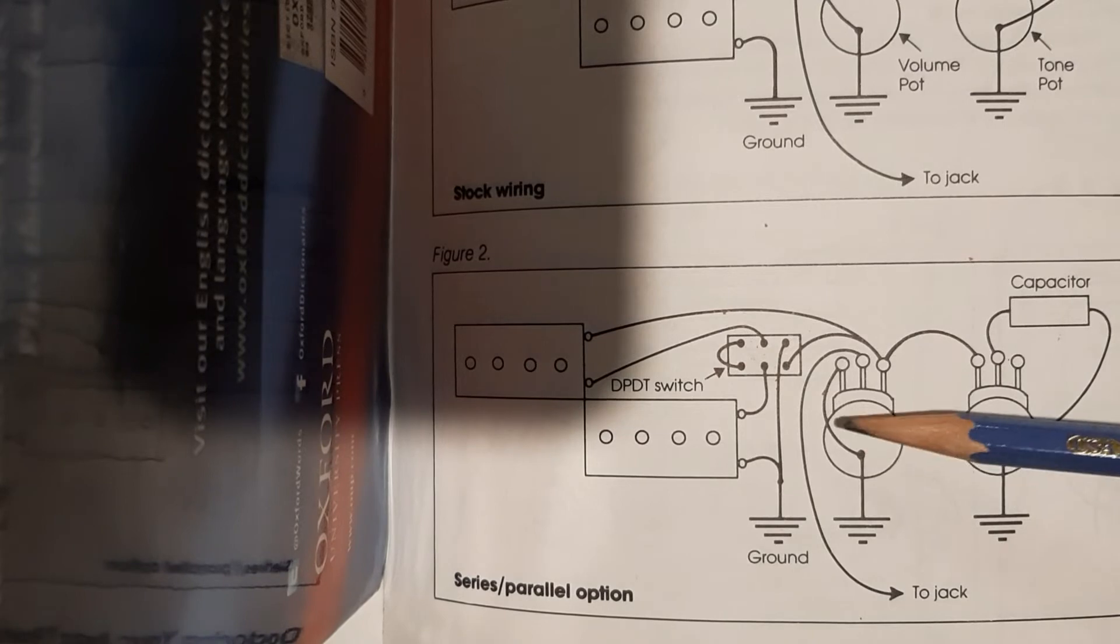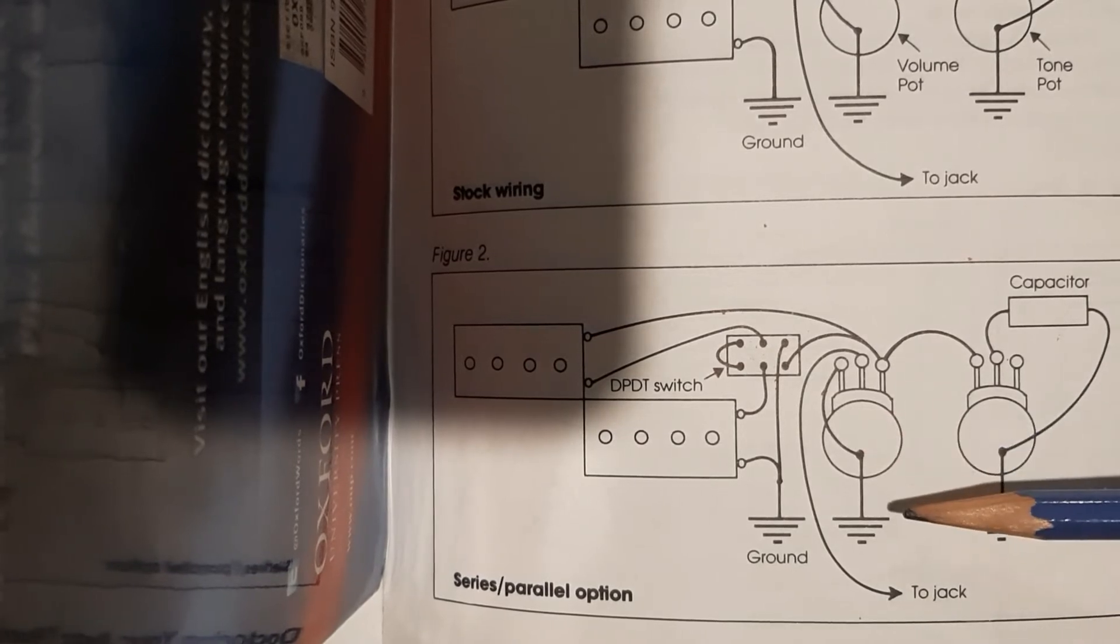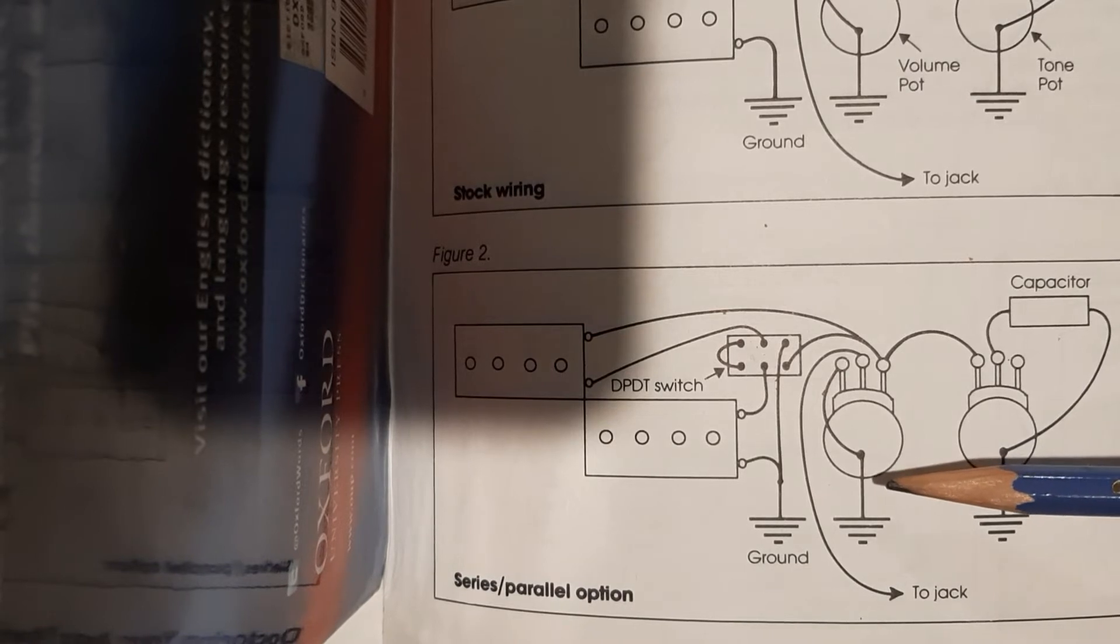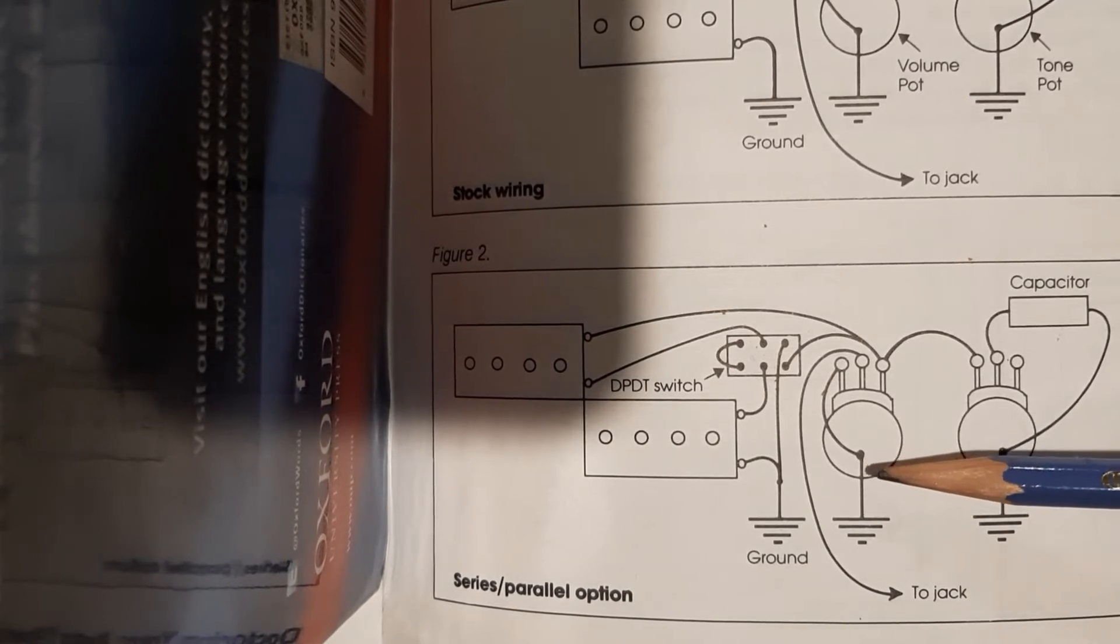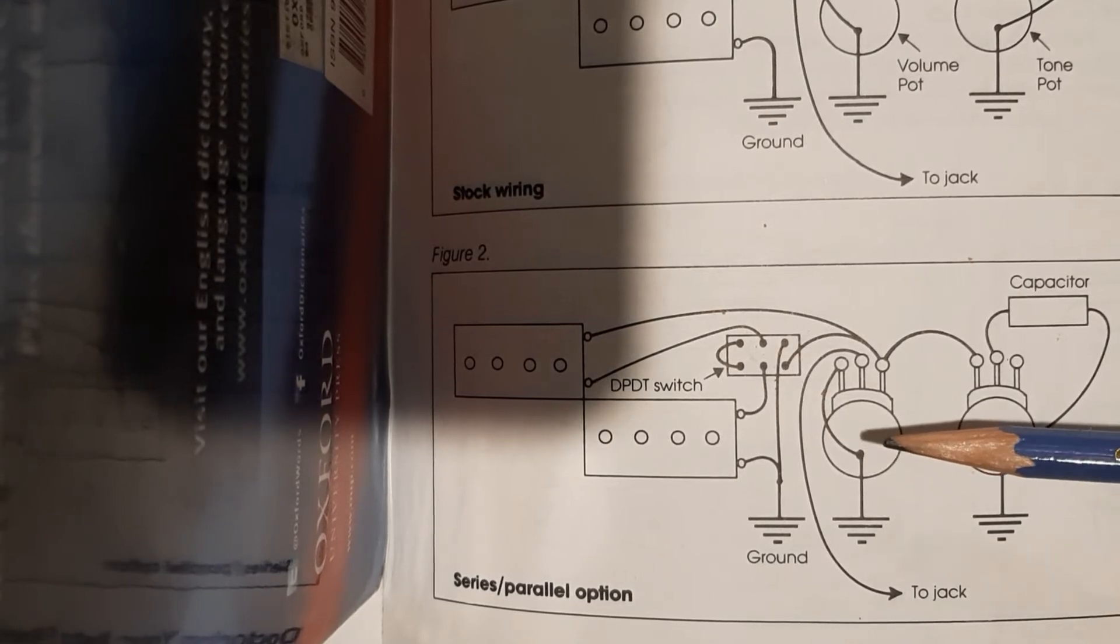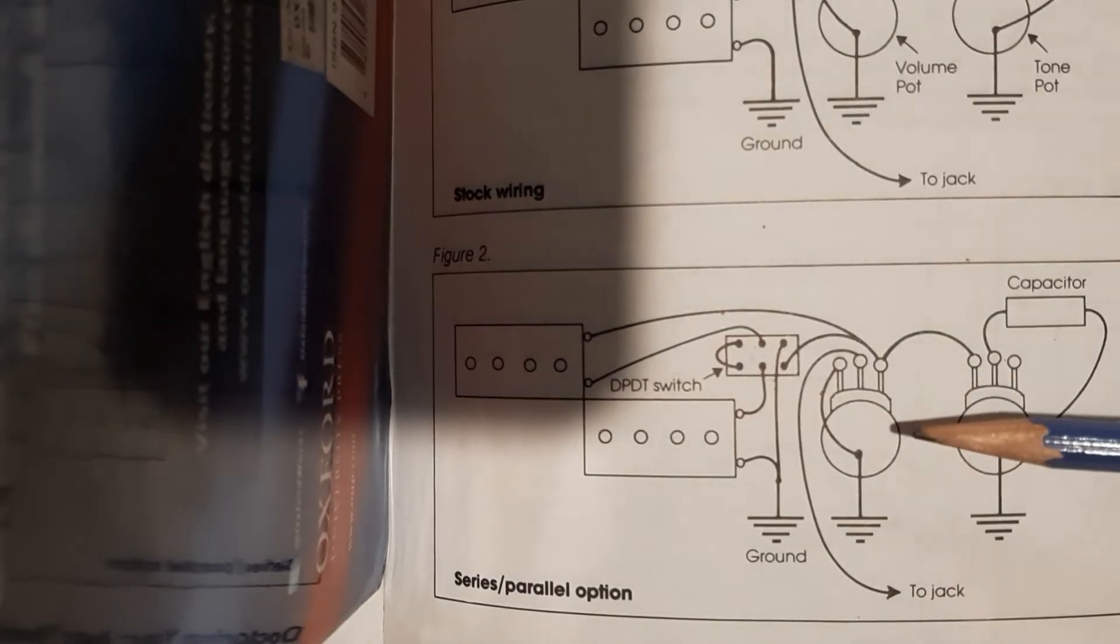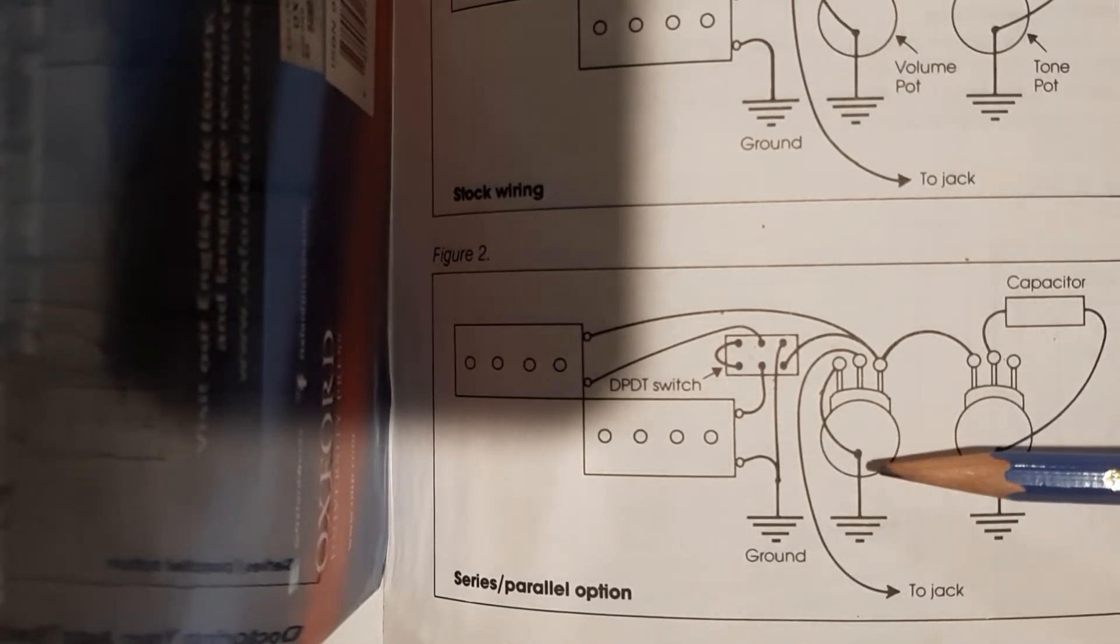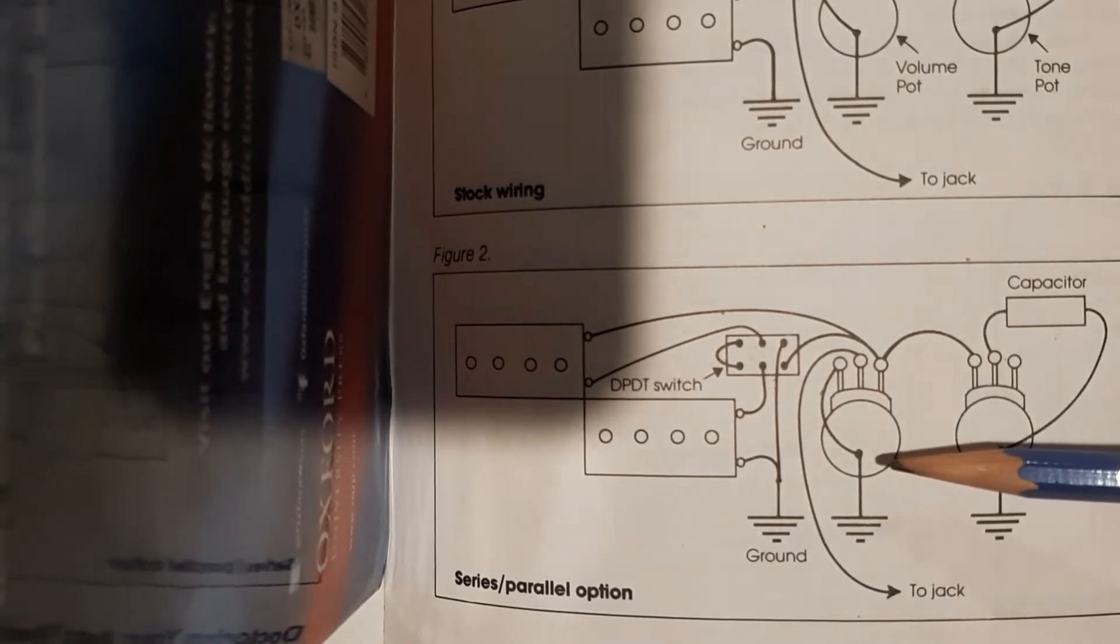There are different values of volume pots. Typically for single coils they use 250k pots, for humbuckers they use 500k pots, and sometimes you'll see people use one meg pots. They do sound different, and that sounds crazy. Why would different resistors sound different?